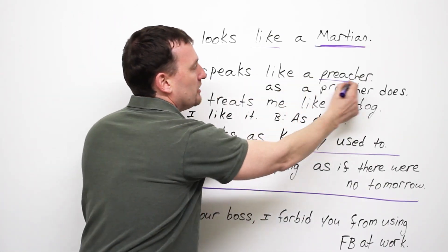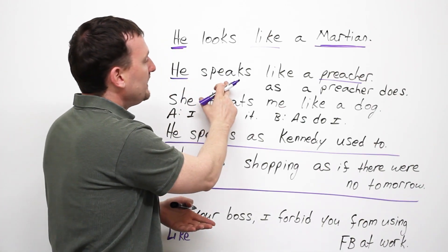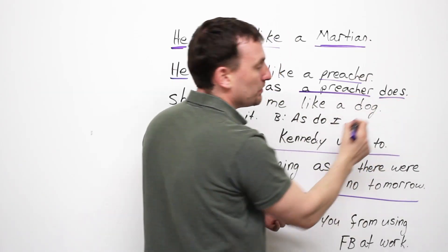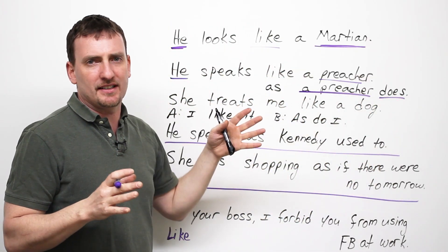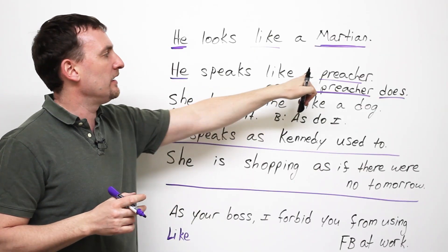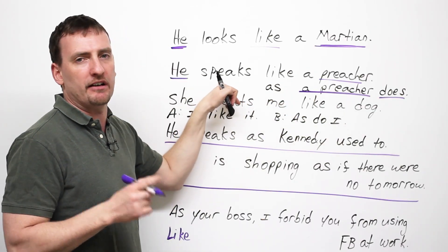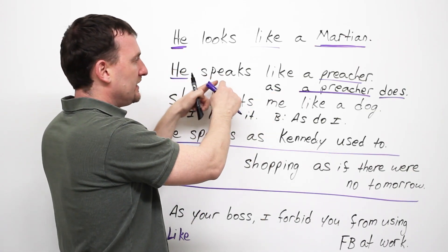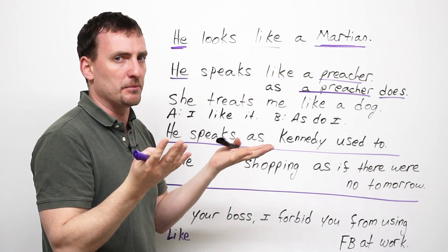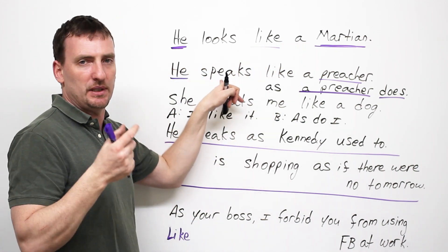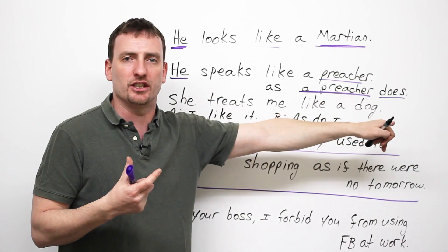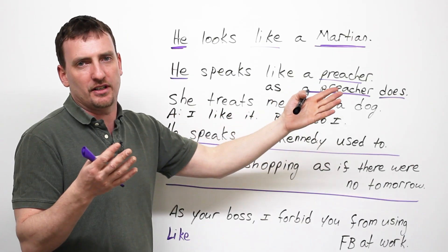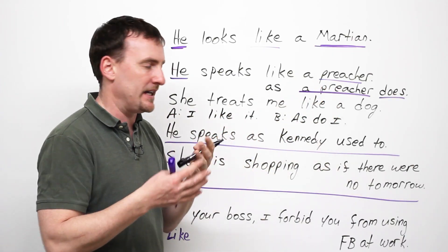So, he and the preacher are very similar. He speaks as a preacher does. So here, remember, subject and verb. Are the sentences the same? Not exactly. Here, we're comparing him and a preacher. Here, we're comparing speaking styles, the way they speak. So, because of the way he speaks, him and the preacher are very similar. Like. But his speaking, his action, and the preacher's action are very similar. So, because he speaks as the preacher does, he is like the preacher. I hope that makes sense.